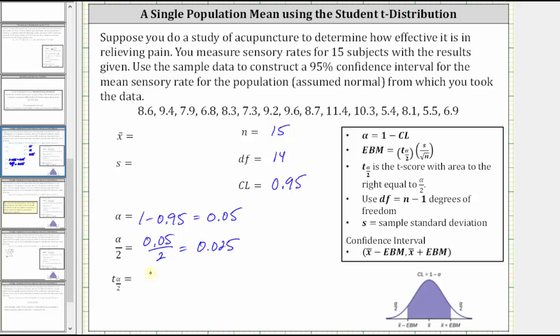So we're looking for the t-score, t sub 0.025, where 0.025 is the area to the right of the t-score. The area to the left is equal to one minus 0.025, which is equal to 0.975. We need this area in order to find the t-score on the TI-84 as well as Desmos. So let's make a note of the area to the left.